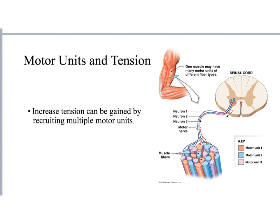A third way the body helps to increase tension is the idea of motor units. Often muscles are grouped so that one motor neuron may feed multiple muscle fibers. Within one muscle group like the biceps, there may be several motor units, and the spinal cord and brain can direct their signal to only one motor unit if just a little tension is needed, or send multiple messages to multiple motor units to produce more maximum tension.